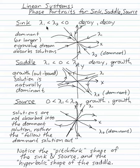For example, a sink where both eigenvalues are negative, where the base solutions are just decaying to the origin in both cases. Here all the arrows go into the origin. We have this pitchfork shape where the dominant or larger eigenvalue stream absorbs solutions. Let's say lambda 2 is the dominant here.